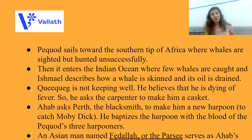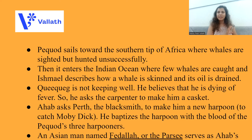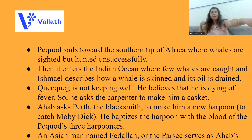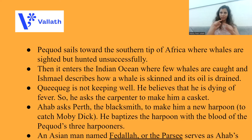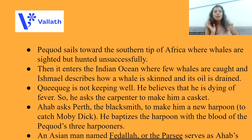During this course of sailing, Queequeg is not keeping well. He believes he will die soon, so he wants a coffin made for him so that at least he has a good death. He tells the carpenter of the ship to make a coffin or casket for him. After this, Ahab asks the blacksmith on the ship, whose name is Perth, to make him a new harpoon — a long spear you throw at the whale in order to kill it. Ahab baptizes this new harpoon with the blood of Pequod's three harpooners.